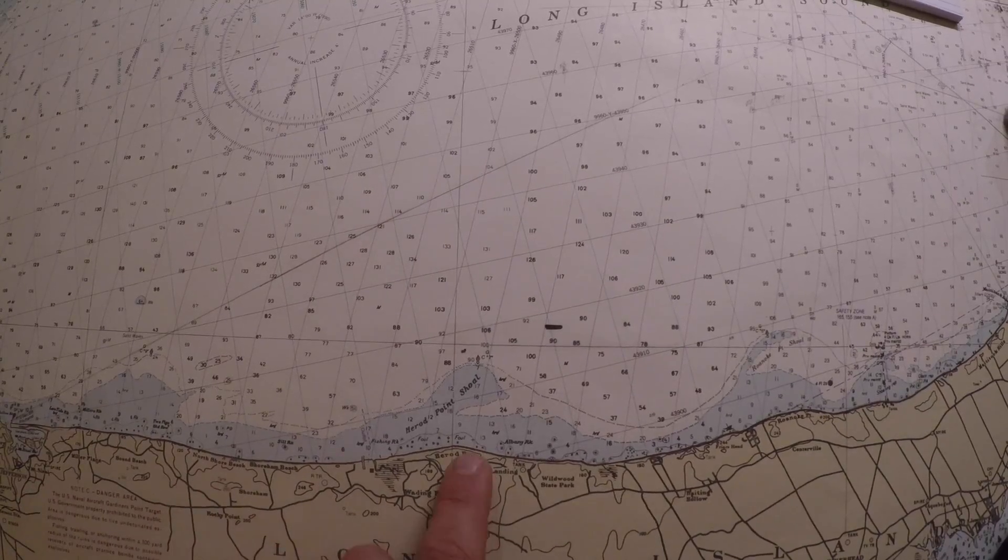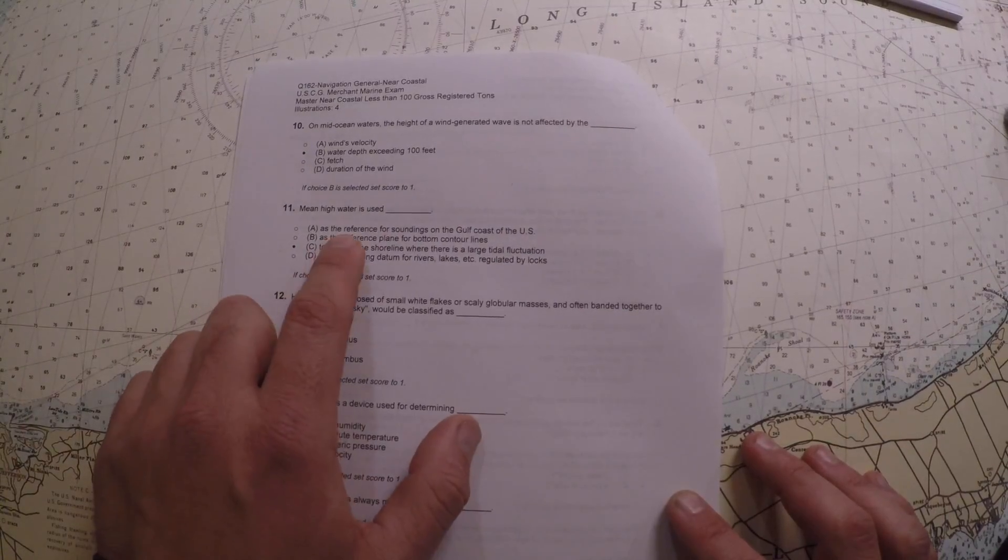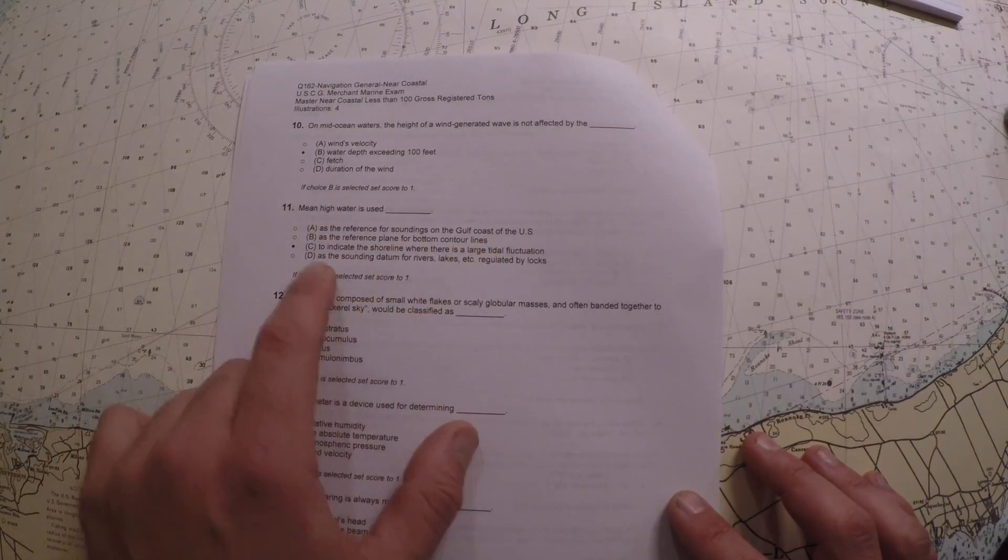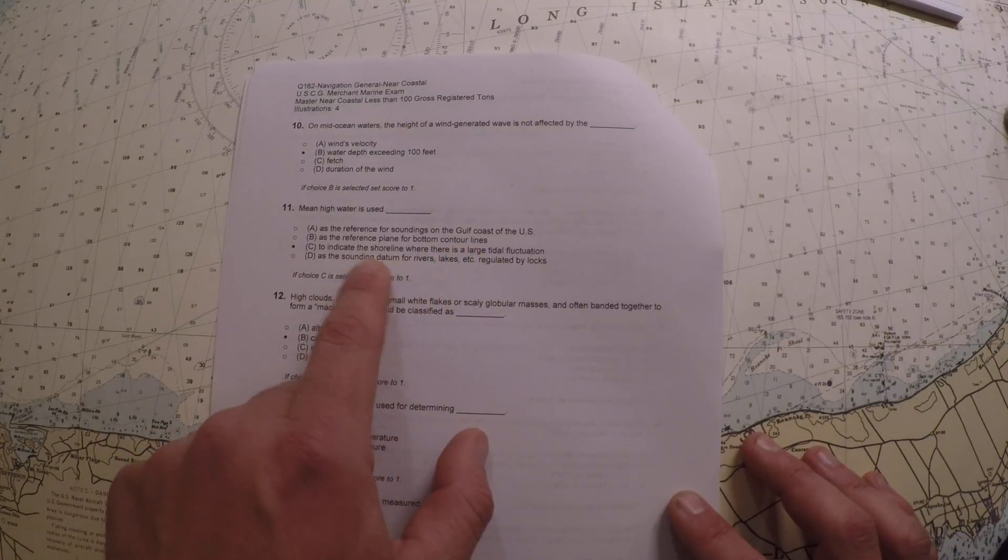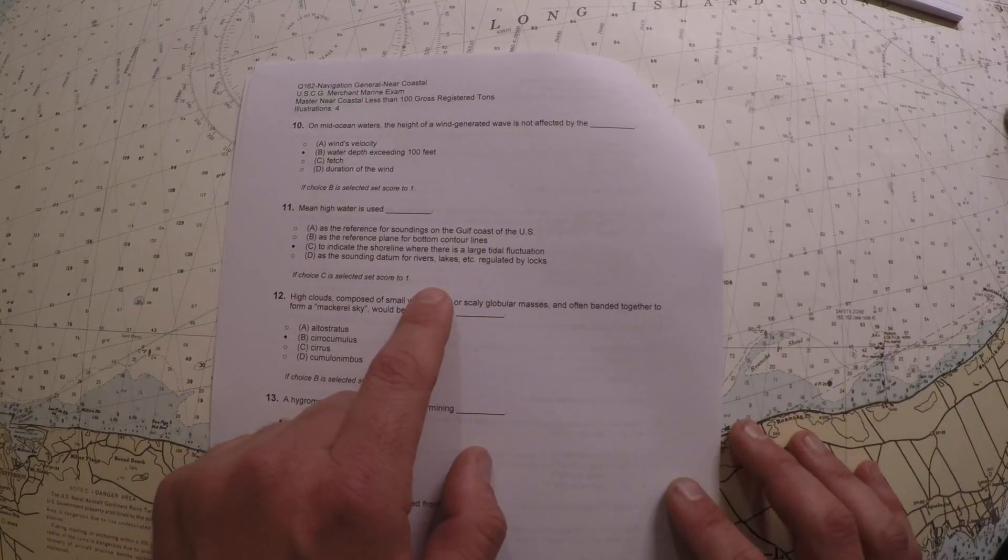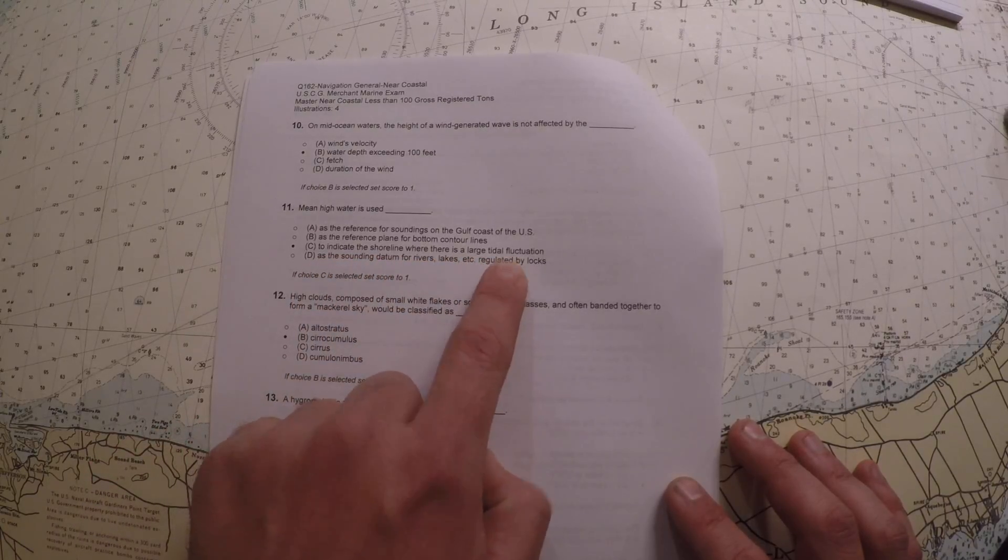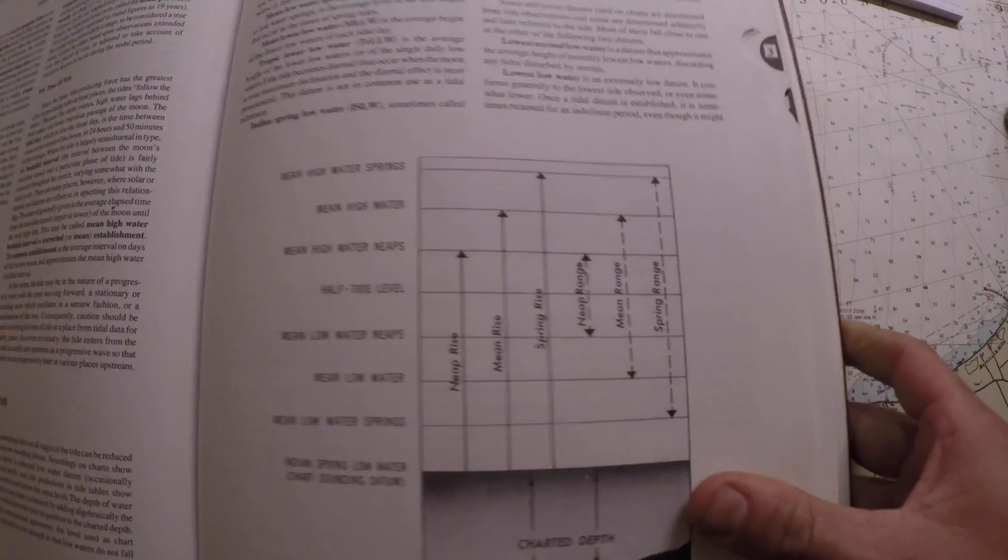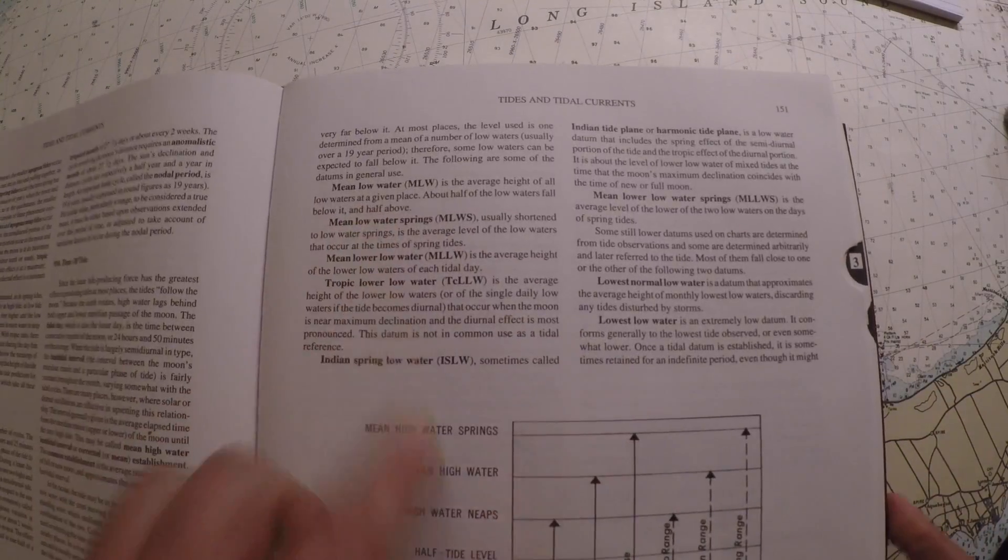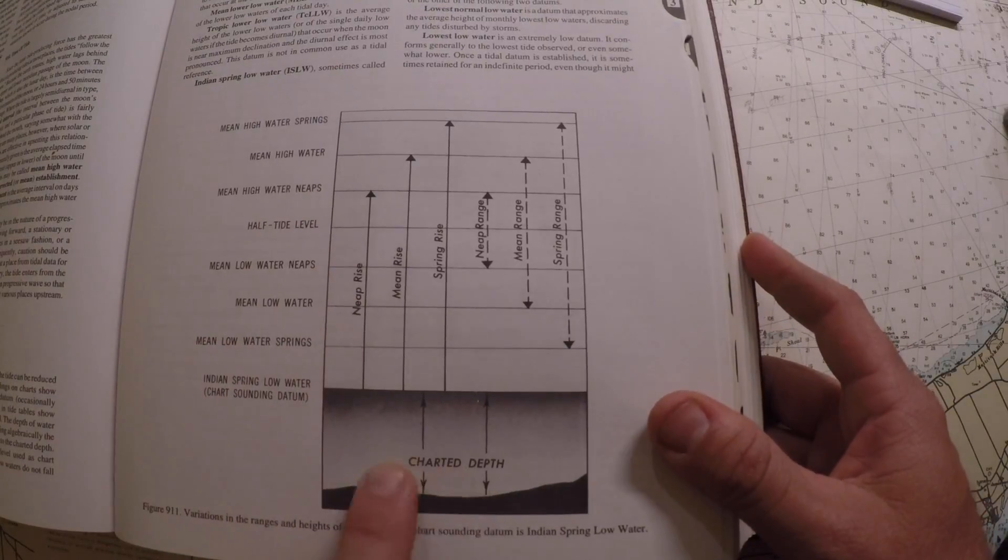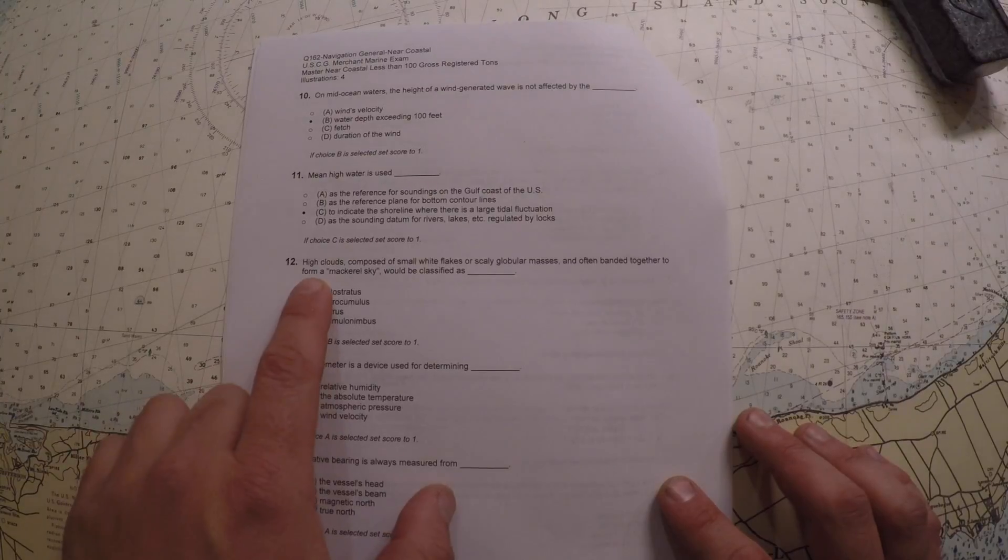Cartography speaking, depths and stuff are usually mean lower low water. Looking at the other examples: is it used as a reference in the gulf, or used as a reference for bottom contour lines, or used as a datum for rivers and lakes? None of those are really true, so we're left with to indicate the shoreline where there's a large tidal fluctuation. There is a good discussion on this in Bowditch in the tide and tidal currents section. It talks about all these different types of waters and gives a nice little diagram.